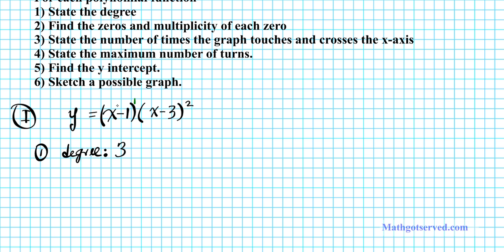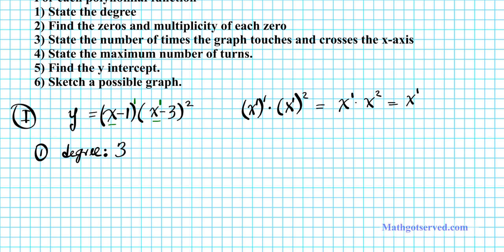To show the steps: this is x to the first power, and this is x to the first power raised to the second power. When you expand, you have x times x squared. Using the power of a power property, you multiply the powers. Then using the product of powers property, you add the exponents — same base, add the powers. So 1 plus 2 gives degree 3.